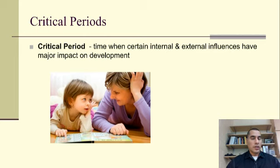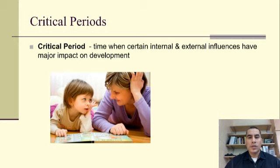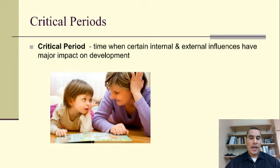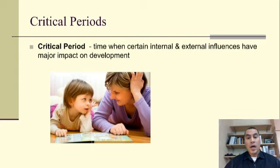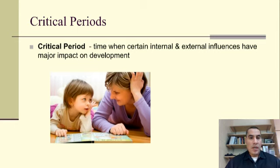An important term to start with is critical period. Throughout our lives, we experience various critical periods — times when certain internal and external influences have a major impact on our development. During childhood, one of those critical periods involves the importance of establishing a social relationship with a parent or caregiver. It is vital that this happens at this stage because the impacts can be carried throughout the rest of one's development.